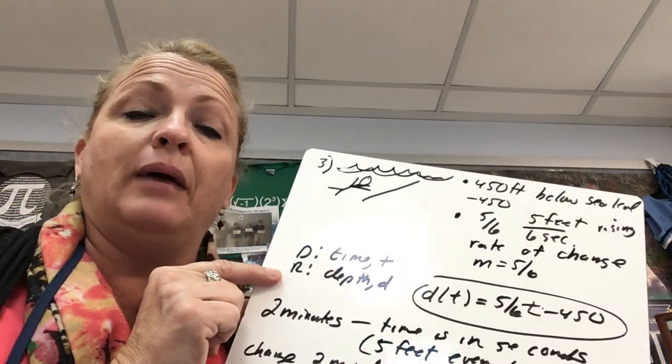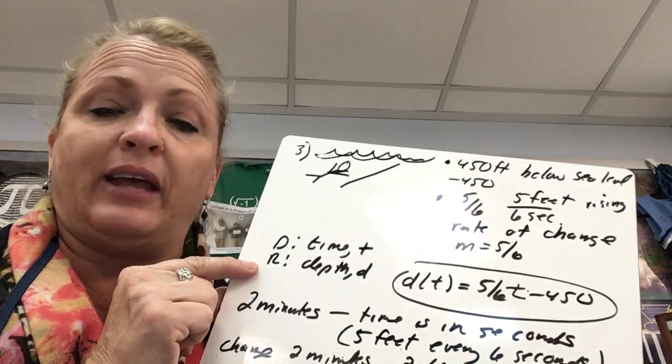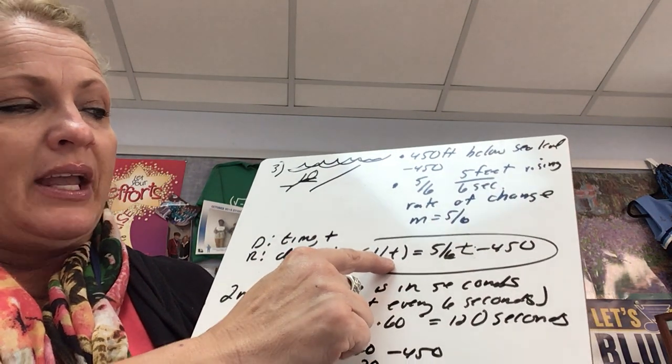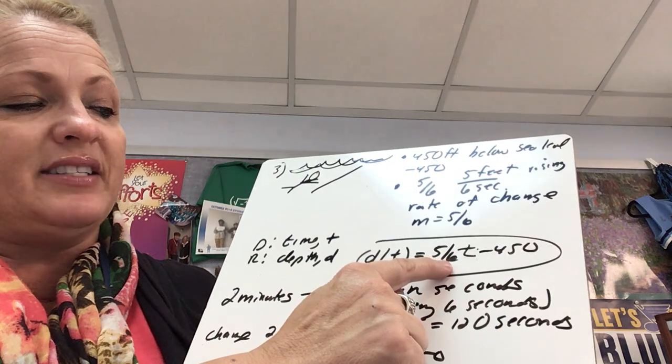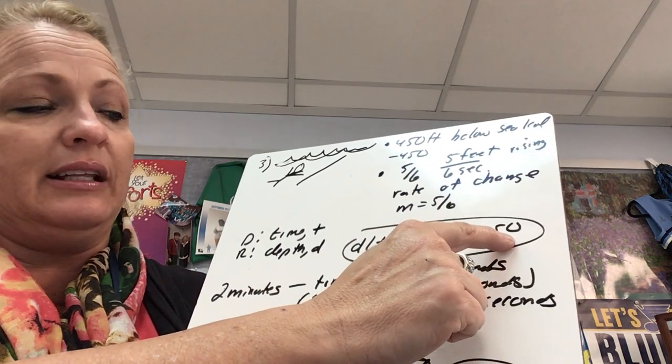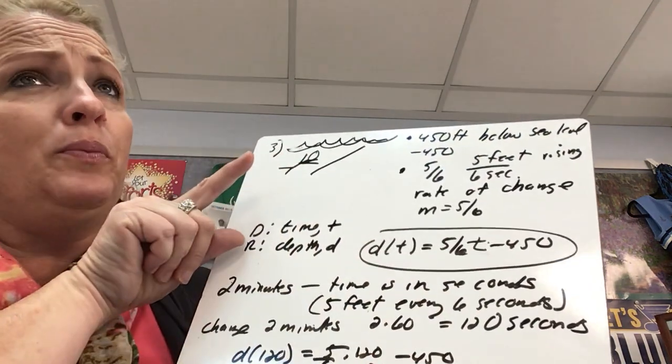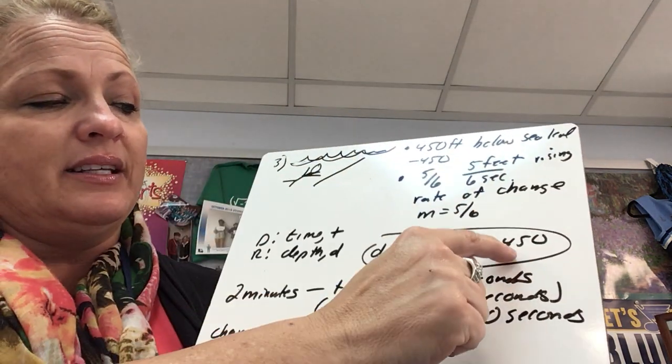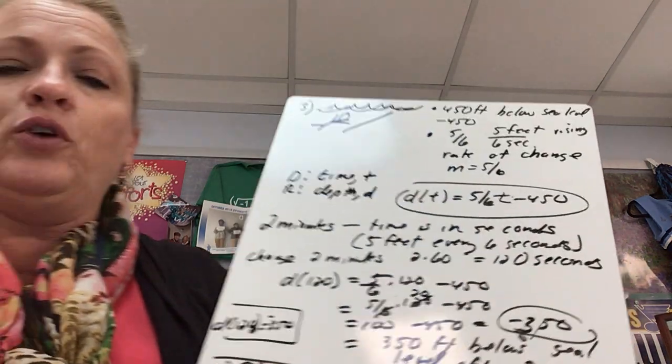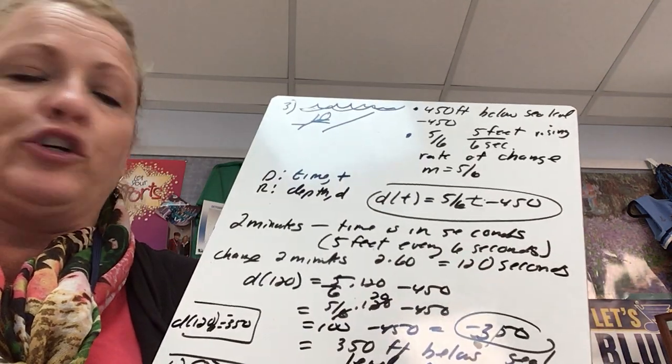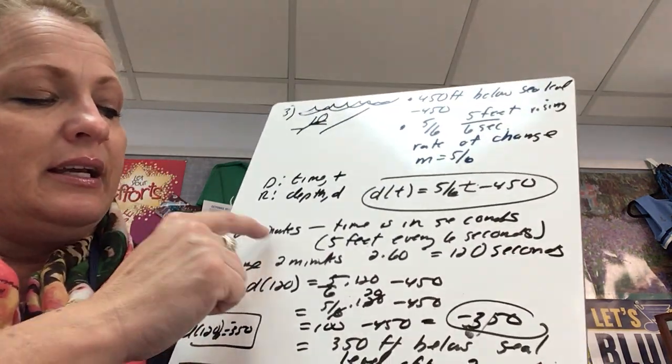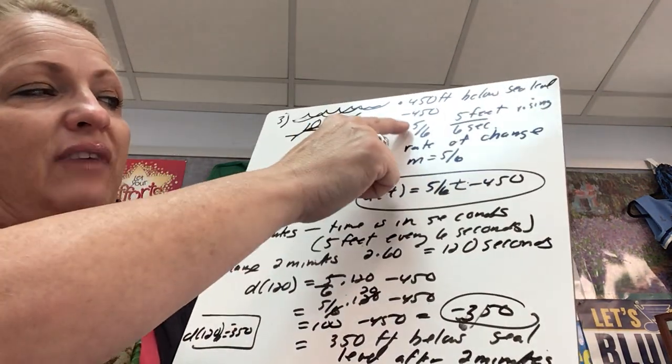So depth is a function of time. We said our rate of change was 5/6, so that's our slope. And they are beginning at 450 feet below sea level. Slope is positive since it's going up. This is negative since it's below sea level. Okay, so now the question is where will the diver be after two minutes? Well we got to make sure we're in the correct time. This is five feet for every six seconds.